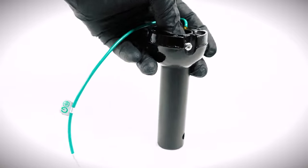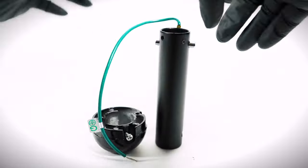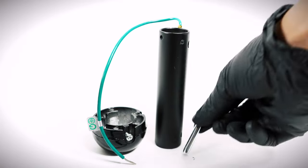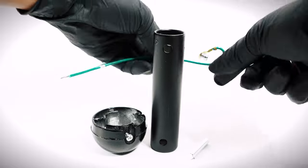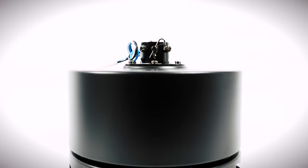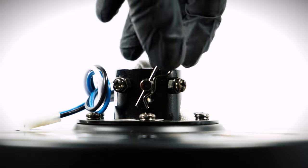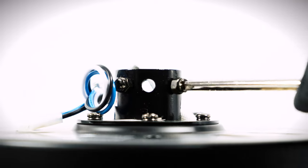On the ball downrod assembly, loosen the set screw and lower the ball off the downrod. Remove the cross pin and ground lead. On the fan motor assembly, remove the clevis pin and cotter pin. Loosen the two collar set screws.